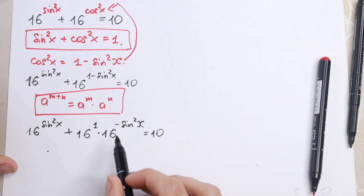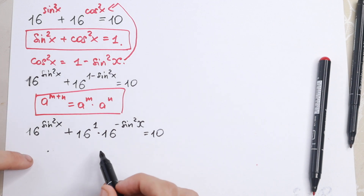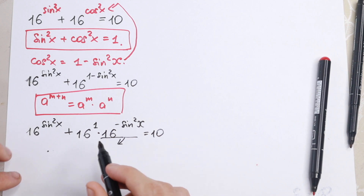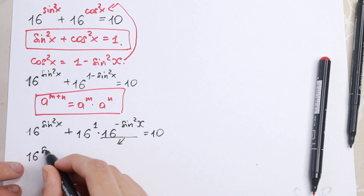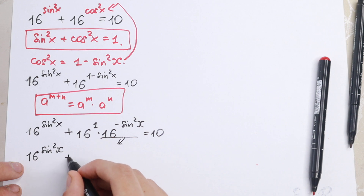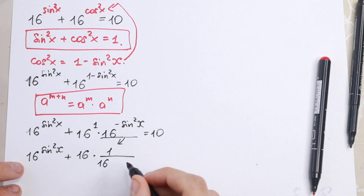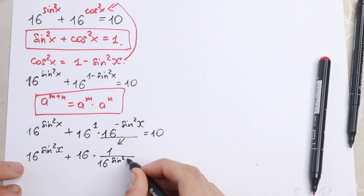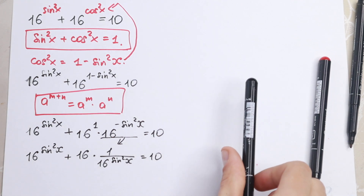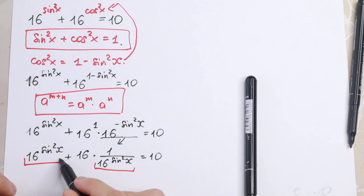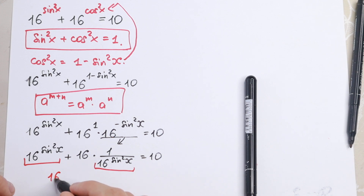We have a negative power here. Bringing this to the denominator gives a positive power. So we rewrite: 16 to the power sine squared x, plus 16 times 1 over 16 to the power sine squared x, equals 10. We now have the same expression appearing twice, so we can use a substitution. Let 16 to the power sine squared x equal y.